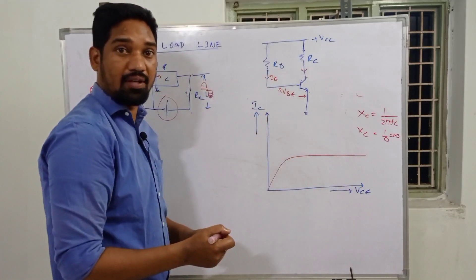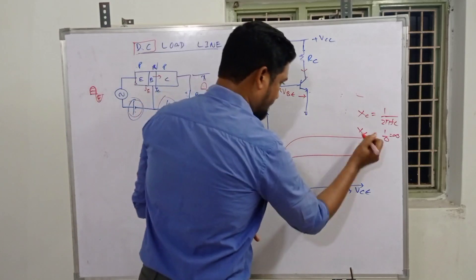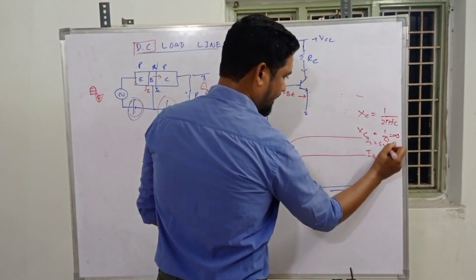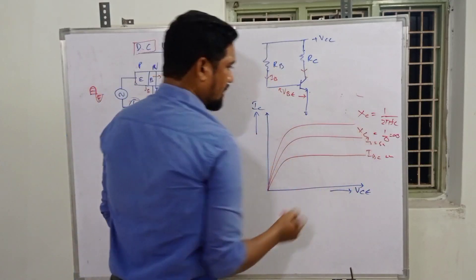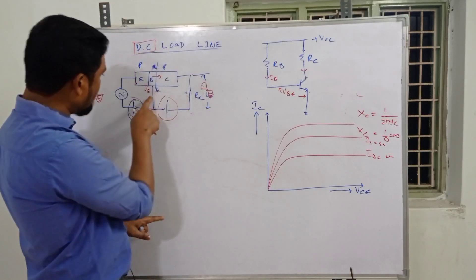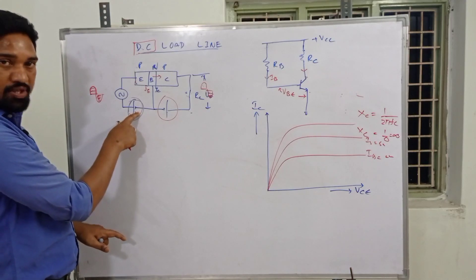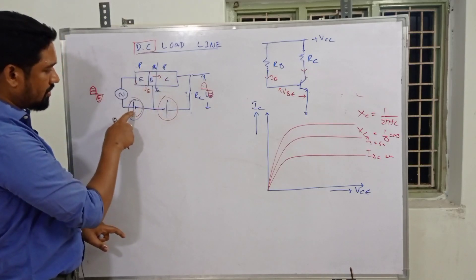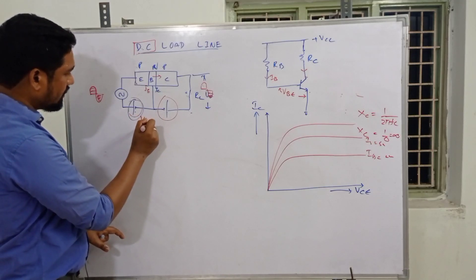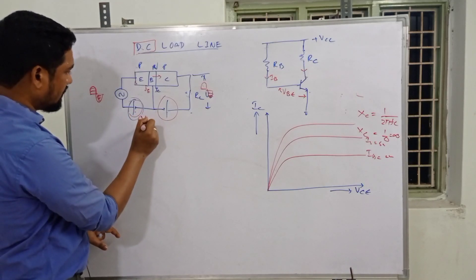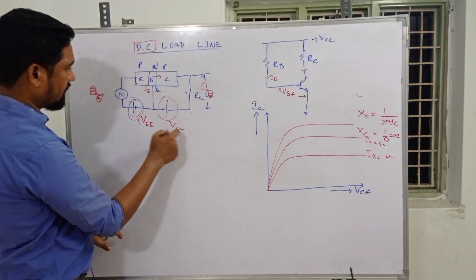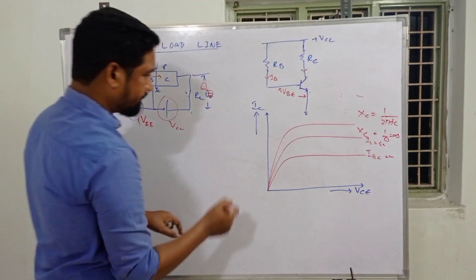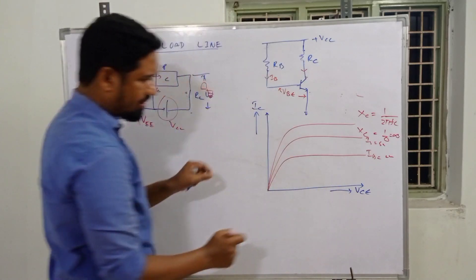For DC load line analysis, capacitors become open circuit because XC equals 1 divided by 2πFC. For DC, frequency is zero, so 1 by 0 is infinite. XC is infinite for DC, meaning the capacitor is open. So for DC load line, the capacitors are not present in the circuit, they're open.